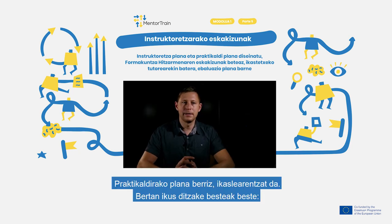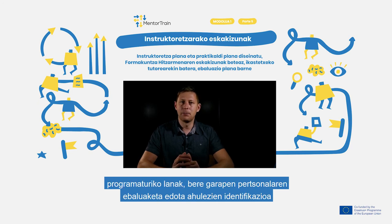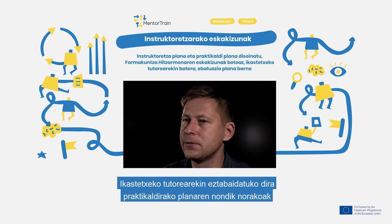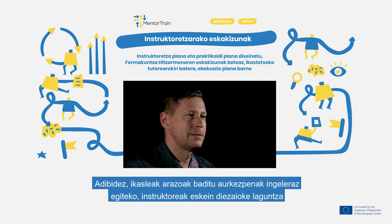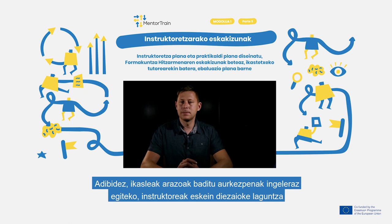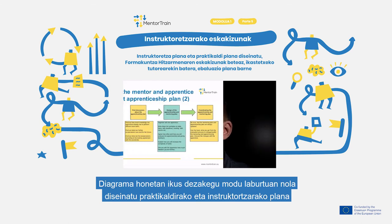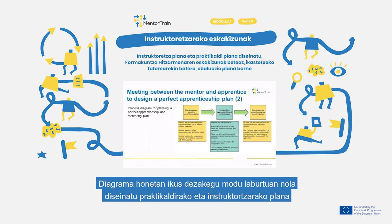The apprenticeship plan is for the apprentice, where they can see planned work tasks, evaluate their personal development, and bring out weaknesses and strengths, then discuss this information with their mentor. They can make changes or add something into the apprenticeship program. For example, when the apprentice has problems making presentations in English, the mentor can offer to have meetings in English.